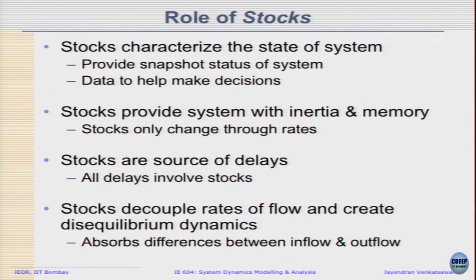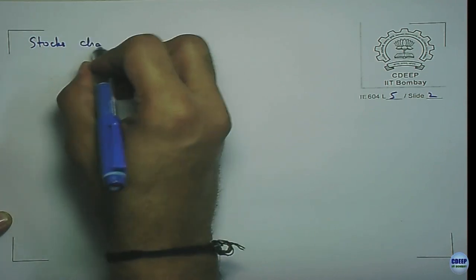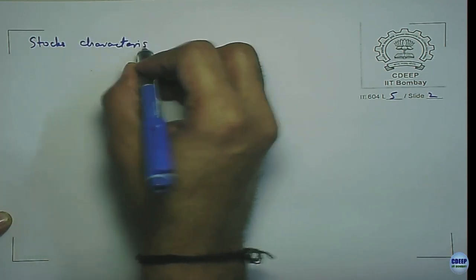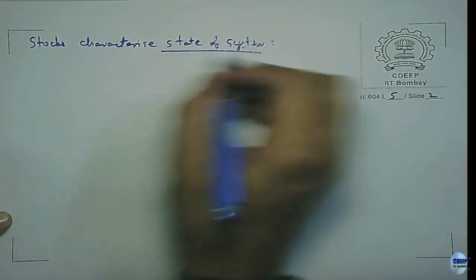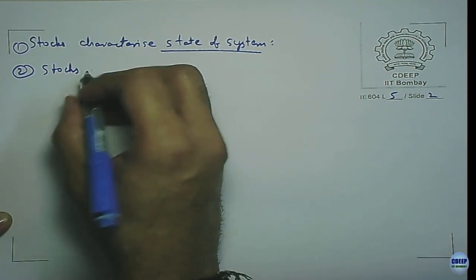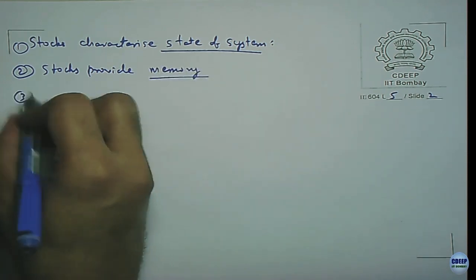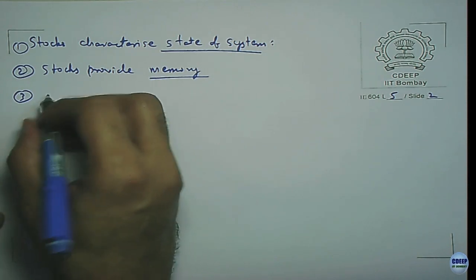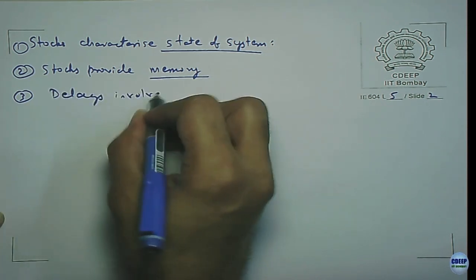Stocks decouple rates of flow and create disequilibrium dynamics; they also absorb the difference between inflows and outflows. To summarize: stocks characterize the state of the system — that is an important point. Stocks provide memory. Third, delays involve stocks.